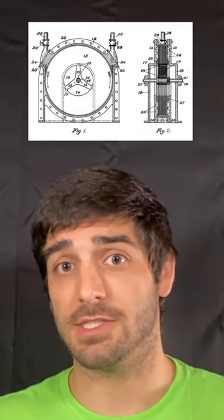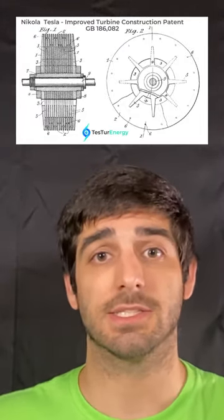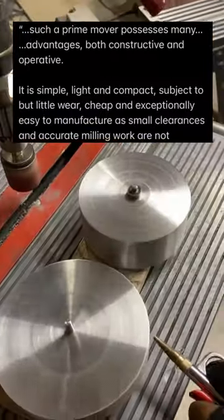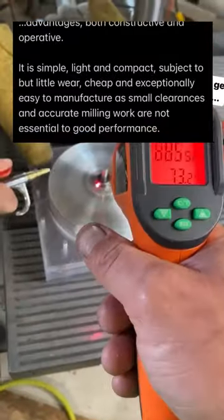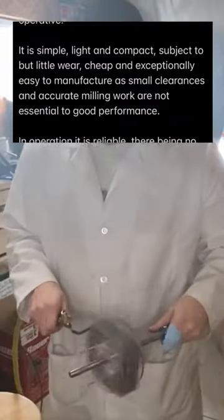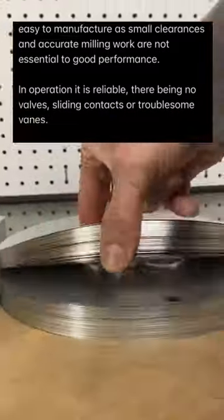When the Tesla turbine, or tester for short, is designed correctly, it has no windage or almost zero turbulent losses between the discs. Tesla himself even believes so. Such a prime mover possesses many advantages both constructive and operative. It is simple, light, compact, subject to little wear, and exceptionally easy to manufacture as small clearances and accurate milling work are not essential to good performance.